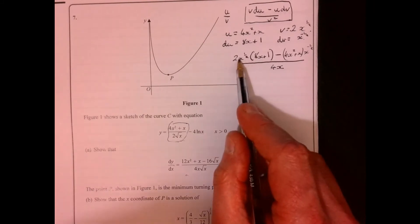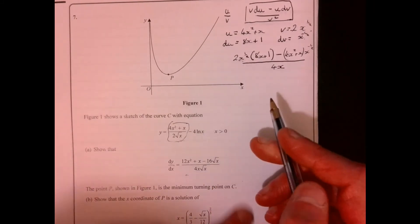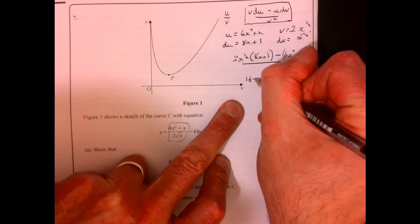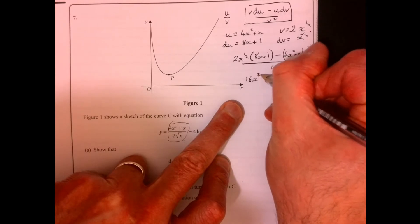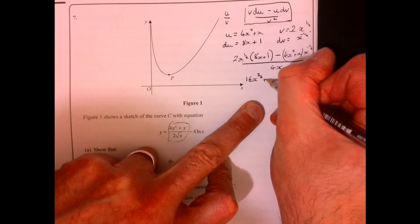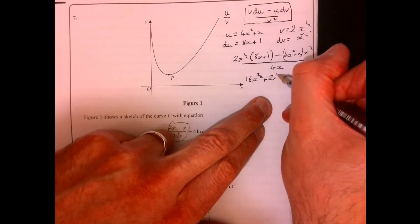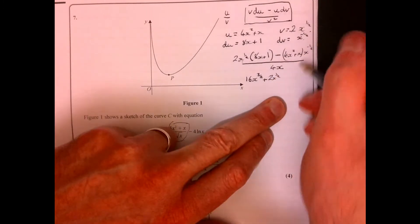Okay, so now let's try and see what we could do. Maybe let's just multiply it out, see what happens here. We're gonna have 16x to the 3/2 plus 2x to the half.